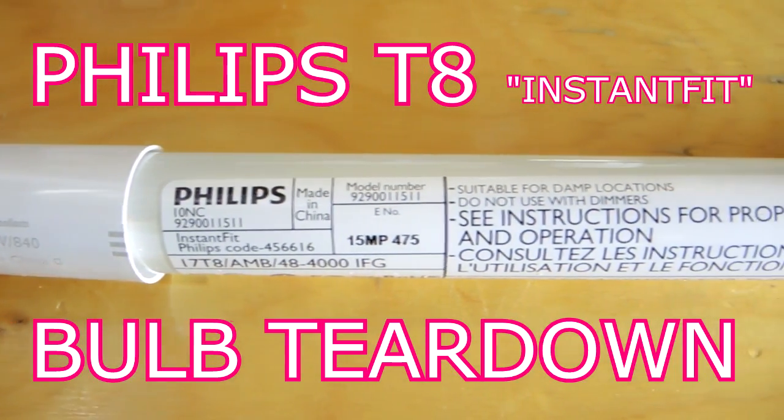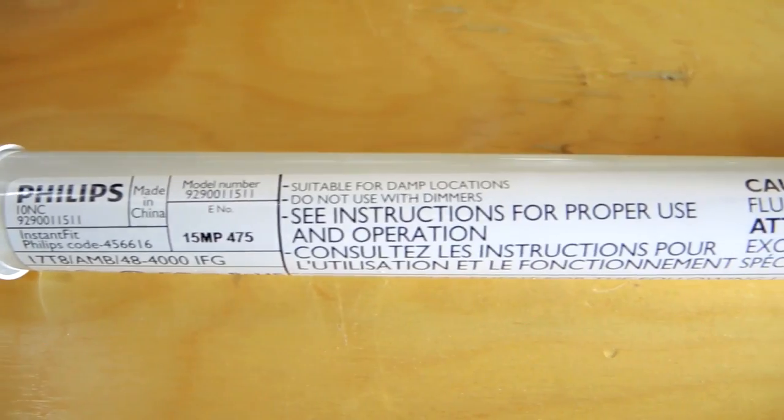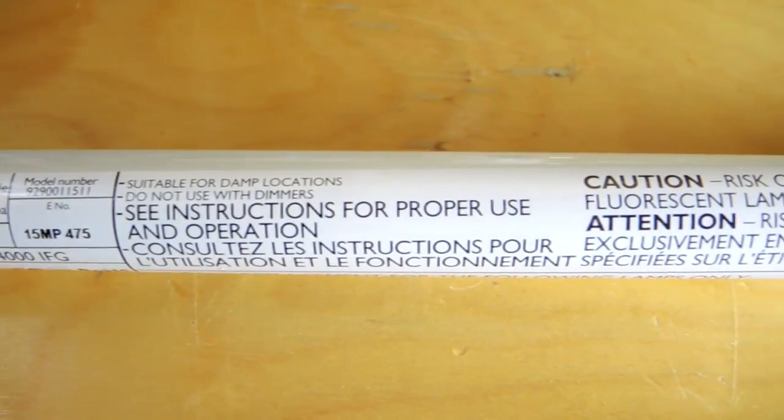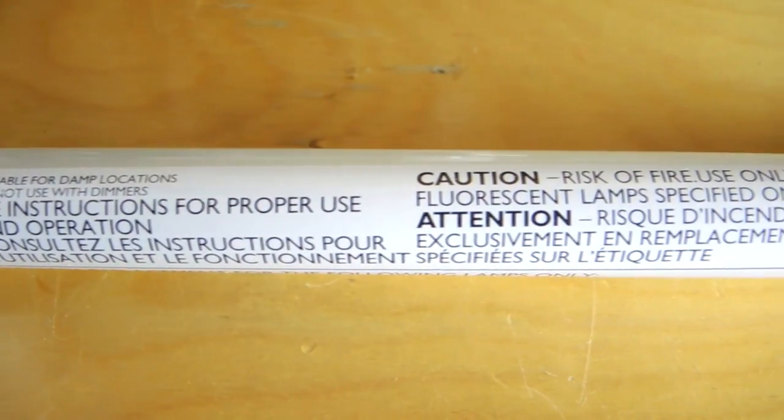Tear down time. This is a Philips T8 LED light bulb, 48 inches long, designed to replace an old fluorescent tube.